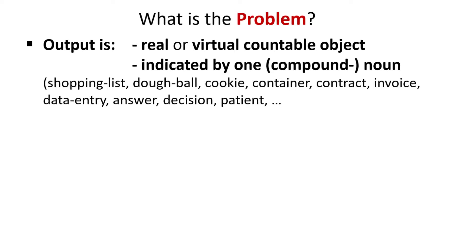In a flow production with continuous output, the product can be a container. In the service sector, contracts, invoices, data entries, answers, decisions, deliveries and even patients are countable outputs.